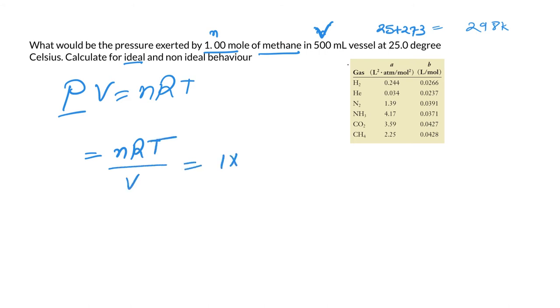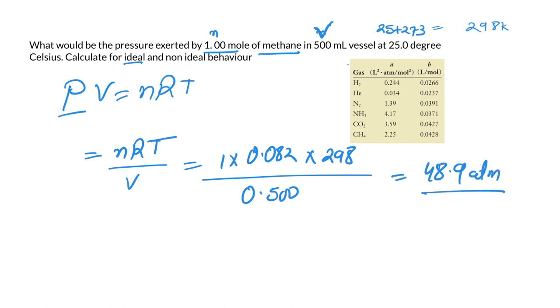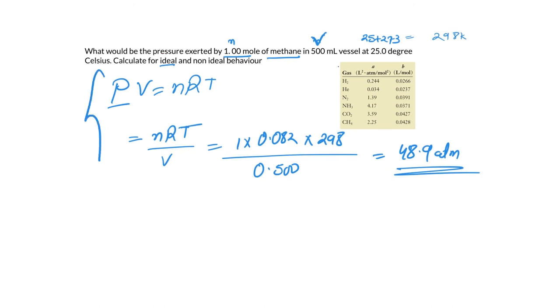n is 1, you already know the value of R, 0.0821. You know the temperature, that's 298, and you know the volume as well, 0.500. Now if you do the math, that comes out to be 48.9 atmospheres. Please mind the units, it's very important. Now this was the case when we were talking about ideal behavior.